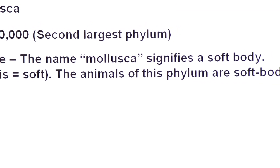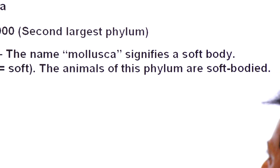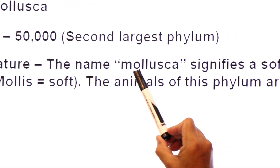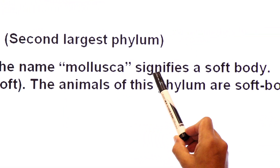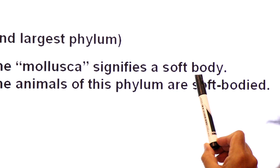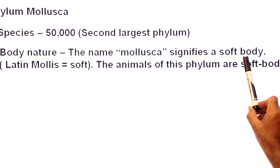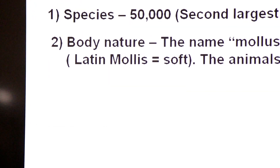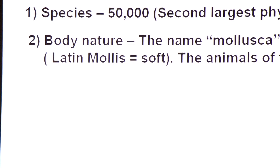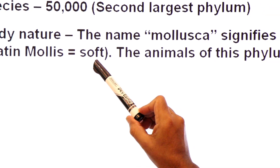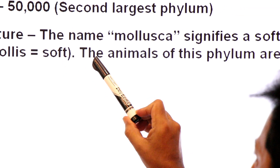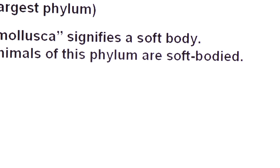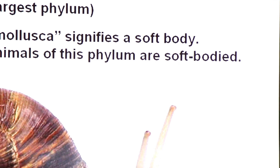The body nature of these animals — they are soft-bodied animals. The name Mollusca signifies a soft body; they all have soft bodies. From Latin 'mollus', which means soft. The animals of this phylum are soft-bodied.